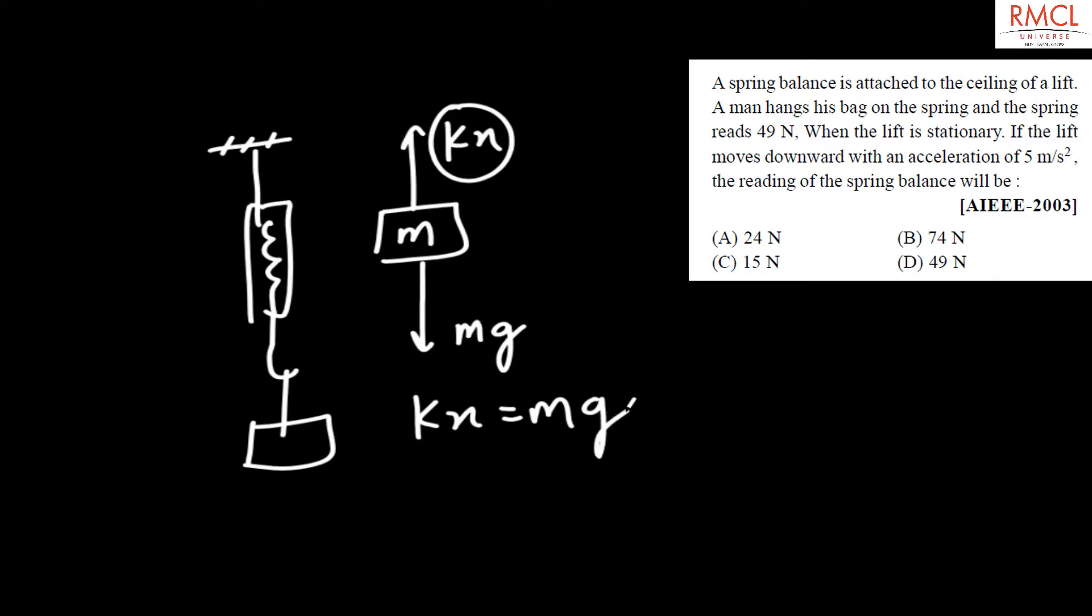What value of kx is given in the question? It is 49 equals mass times acceleration. What is the value of acceleration? It is 9.8.